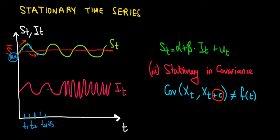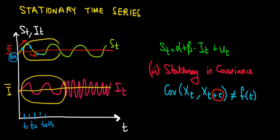Now notice the difference for the inventory variable. Inventory has a certain average value shown by the yellow line. The variation fluctuates up and down around it, so the stationary variance assumption holds. In the beginning, the covariance is similar to sales — we have a positive covariance across time. The value of inventory at one point is positively correlated with the value at the next period, both above and below the average.